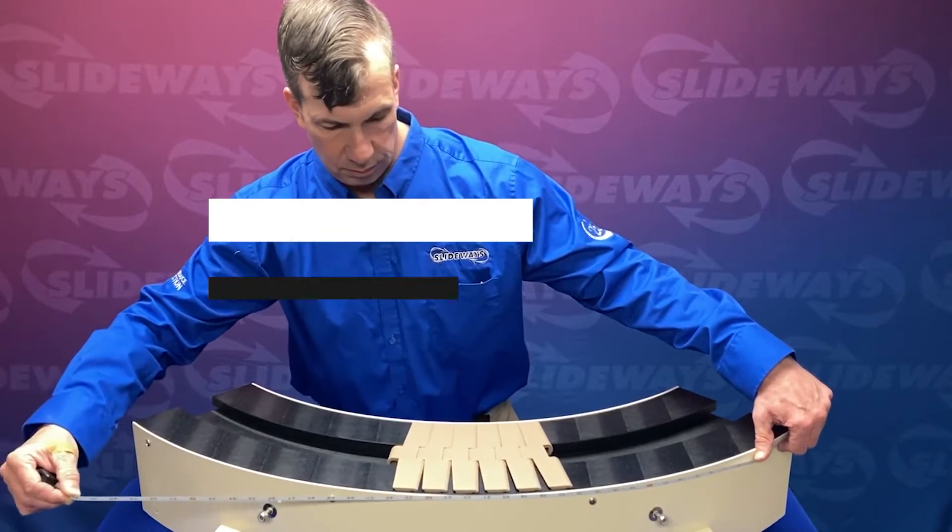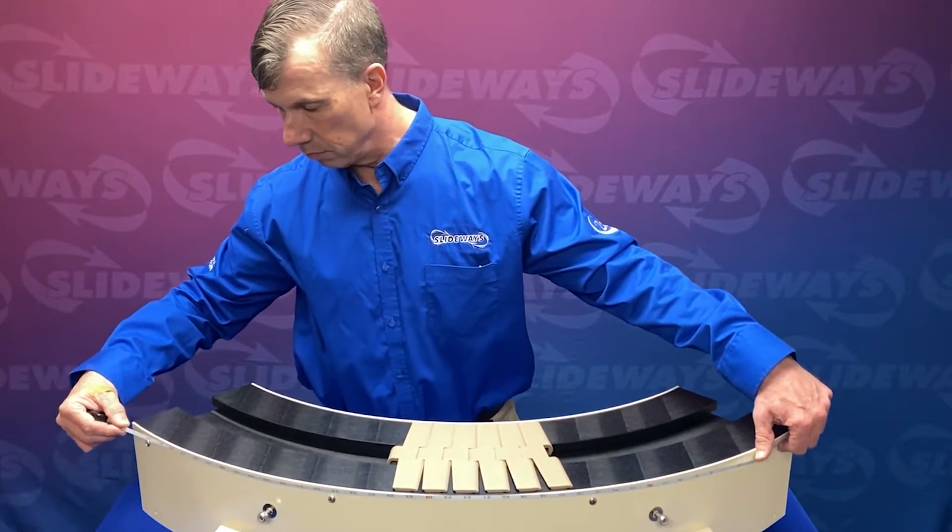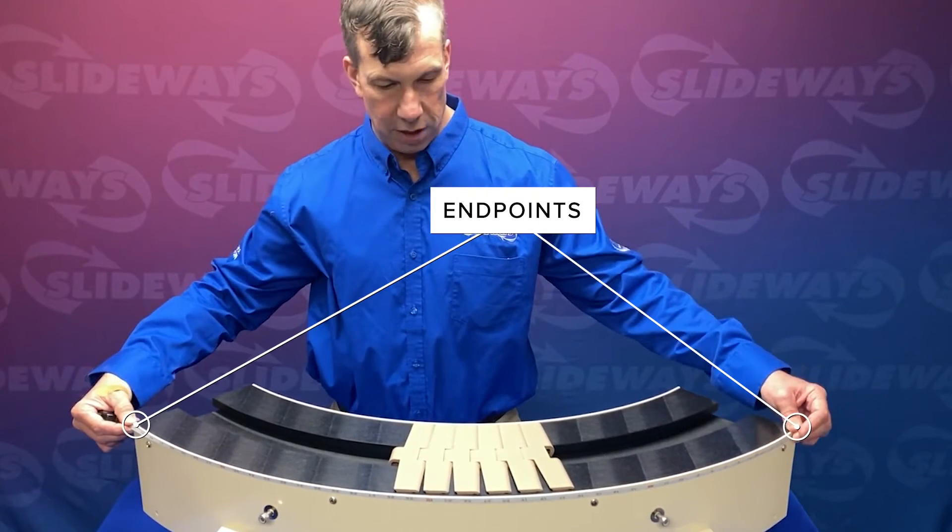Using a flexible tape measure, measure on the outside of the track from endpoint to endpoint. This is the arc length. If the track has tangents, do not include them in this measurement. We'll go into tangents later in this video.